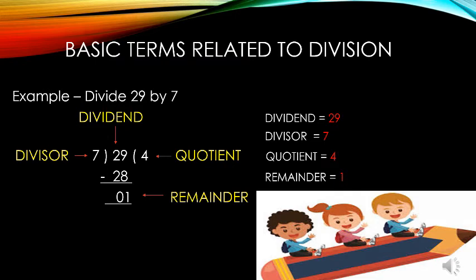Before solving questions related to division, let us understand the basic terms. Divide 29 by 7. We need to check how many times 29 is divisible by 7. We know that 7 times 5 is 35, which is more than 29. So we take 7 times 4, which is 28. Write 28 below 29 and subtract. 29 minus 28 equals 1. So our dividend is 29, divisor is 7, quotient is 4, and the remainder is 1.